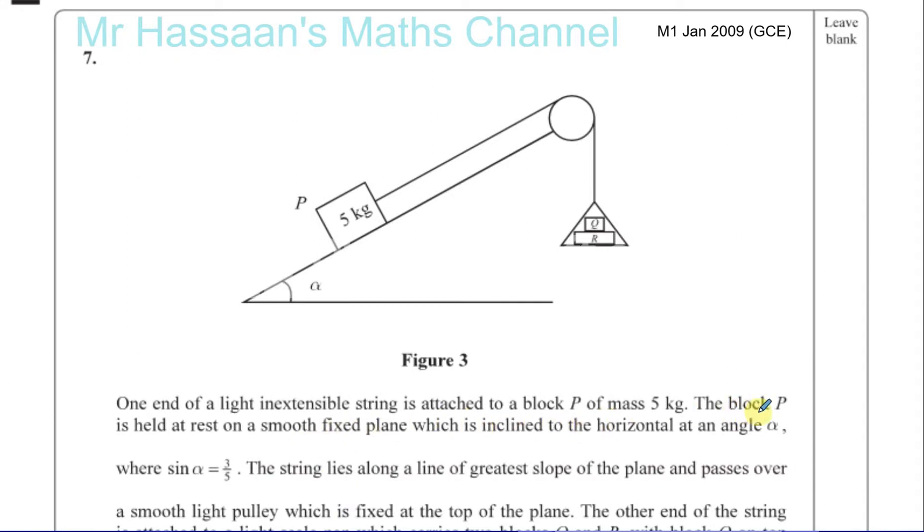The plane is inclined to the horizontal at angle alpha, where sine alpha is equal to 3 fifths.